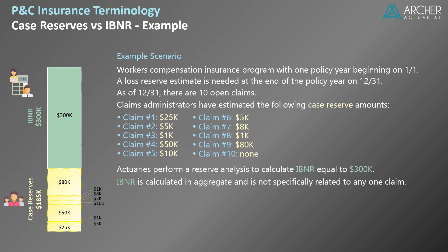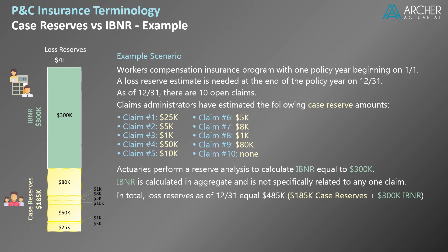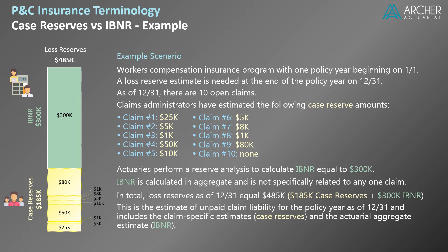Recall that IBNR is calculated in aggregate and is not specifically related to any one claim. In total, loss reserves as of 12/31 equal $485,000, which comprises $185,000 of case reserves and $300,000 of IBNR. This is the estimate of unpaid claim liability for the policy year as of 12/31, and includes claim-specific estimates — case reserves — and the actuarial aggregate estimate, IBNR.